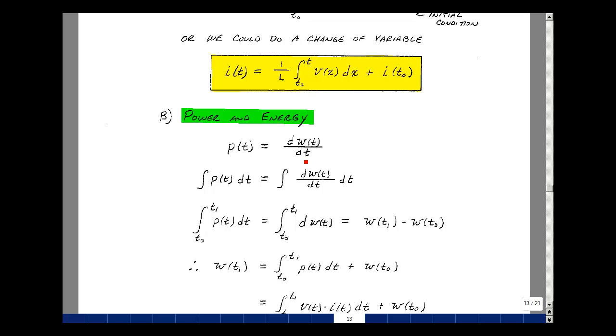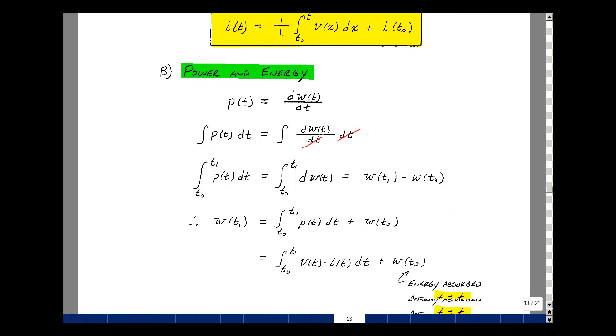Recall from chapter one we had that power was related to the derivative of energy. Let's take a look at some of the properties of inductance with energy and power. Integrate both sides of the equation dt and these will cancel. We have the integral of dW of T and that's the upper limit minus the lower limit.